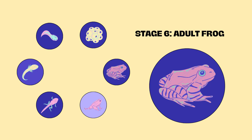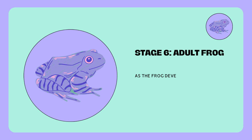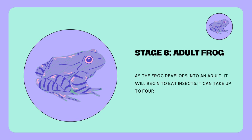Stage 6: Adult Frog. As the frog develops into an adult, it will begin to eat insects. It can take up to four years before the frog becomes fully mature.